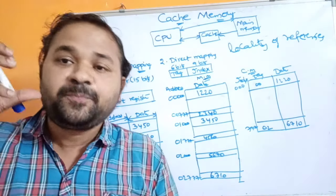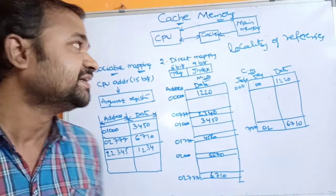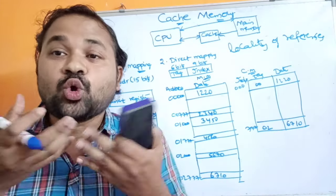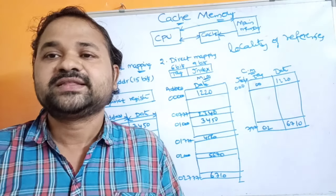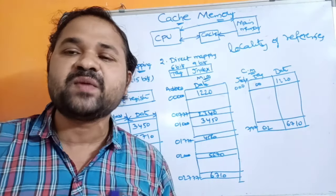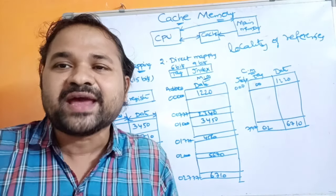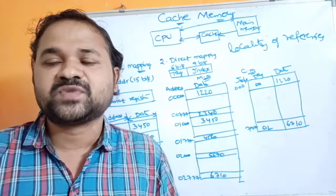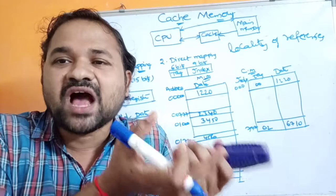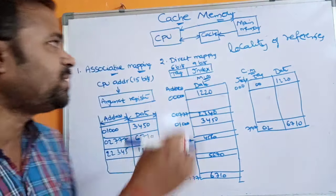Locality of reference states that a certain set of statements are executed very frequently and the remaining statements are executed less frequently. With cache memory, if we place those active, frequently-used instructions in cache memory, the total execution time of the program will be reduced — that is, the average memory access time will be reduced, because cache memory access time is extremely faster than main memory access time.